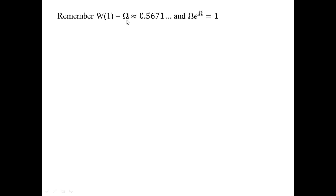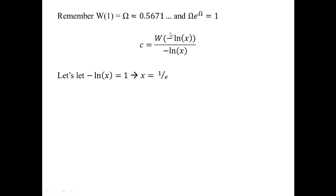For one last example, let's apply the formula to the omega constant, which is W(1), approximately 0.5671, and has the property that ω · e^ω = 1. I want the argument −ln X to equal 1, so setting −ln X = 1 means X = 1/e. Plugging into the formula gives W(1)/1 = W(1) = ω.